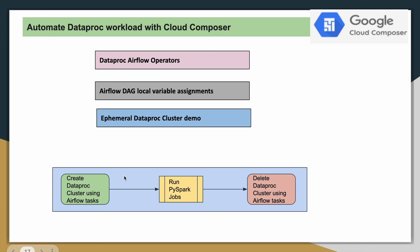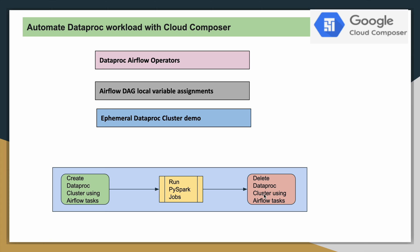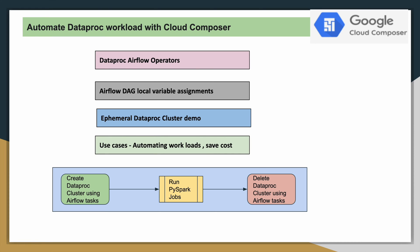In the ephemeral Dataproc cluster concept, you create the Dataproc cluster, execute a bunch of jobs, and then delete the cluster. The cluster only lives during your group of job execution. For example, if you have a group of jobs running 4 to 5 hours per day, after that your cluster remains idle but you still pay for its compute and storage. To save that cost, you delete the cluster once your jobs complete successfully. This whole concept is called ephemeral Dataproc cluster.